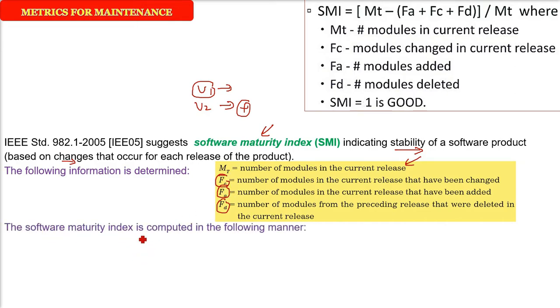So the SMI is computed like this: Mt minus (FC plus FA plus FD) divided by Mt.